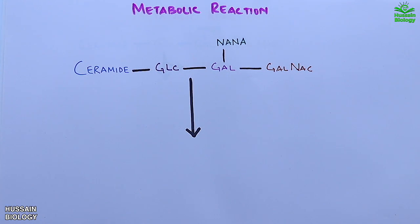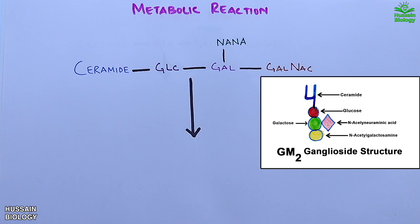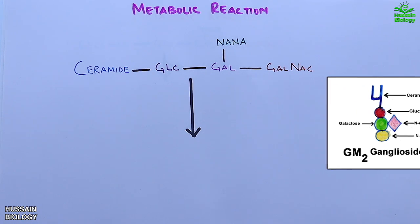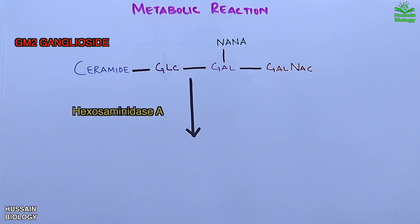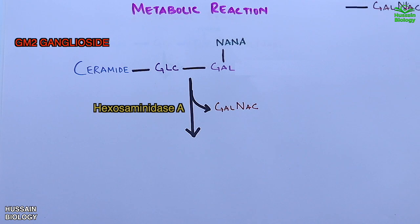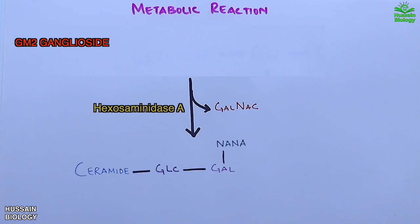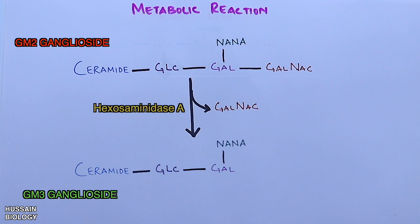In this diagram we can see the diagrammatic structure of GM2 ganglioside analogous to the molecular structure. In the metabolic reaction, GM2 is acted upon by hexosaminidase A enzyme, which removes GalNAc from it, and we get GM3 ganglioside — the same as GM2 but lacking GalNAc, as shown in the diagram.